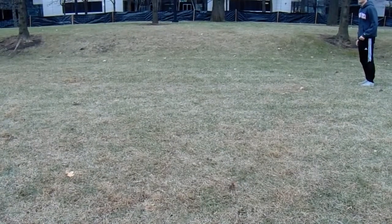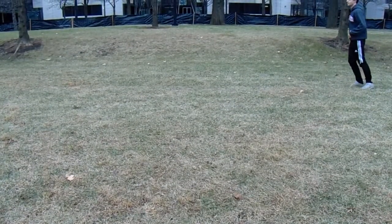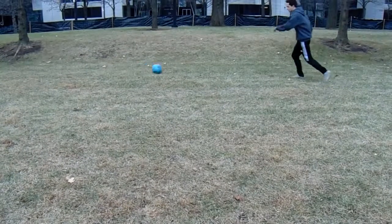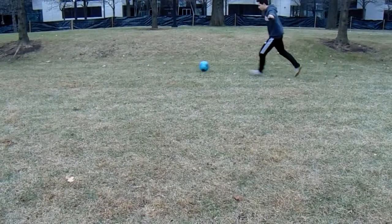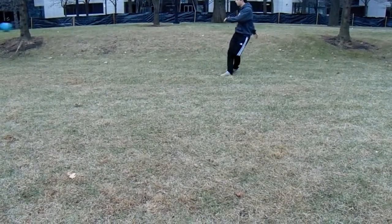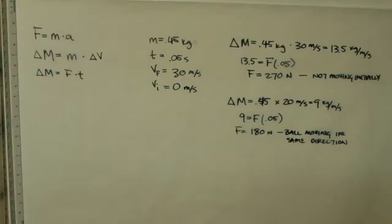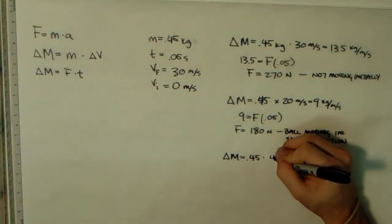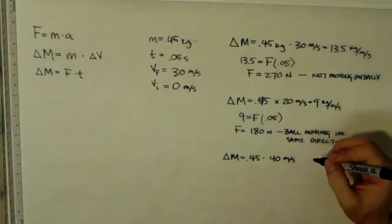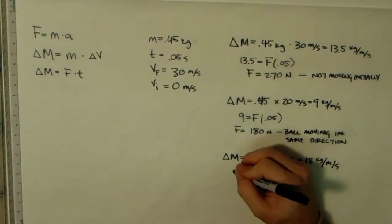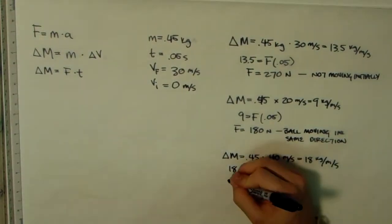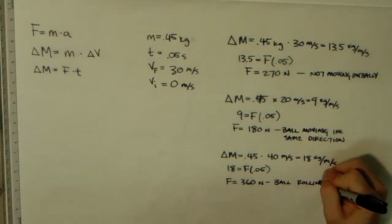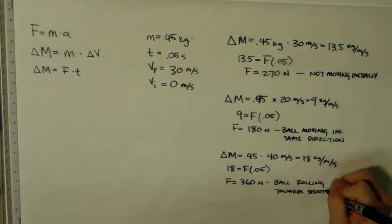Finally, we calculated the force needed for a ball traveling in the opposite direction of the kick. The rest of the variables remain the same. However, the change in velocity is now 40 meters per second, because the ball was initially traveling in the opposite direction at 10 meters per second. From this, we found that 360 newtons of force is required to kick a ball moving in a different initial direction than the kick.